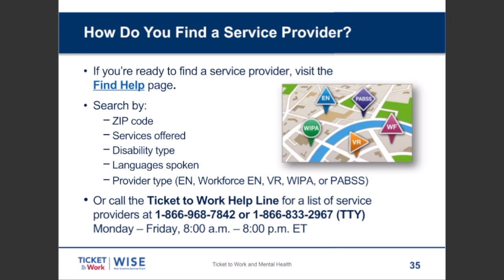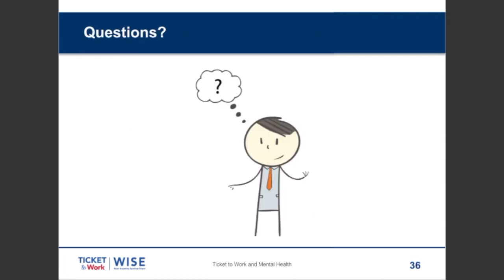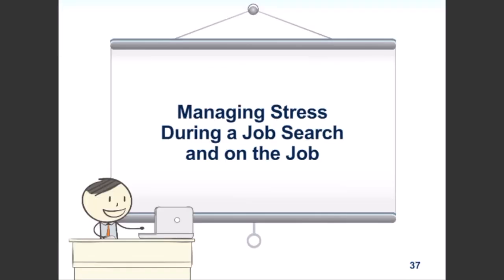I want to revisit the importance of the Ticket to Work Helpline. You can get a list of service providers customized for you from our helpline team at 1-866-968-7842, or through TTY at 1-866-833-2967. And with that, let's move forward now to focus on our theme around mental health and managing stress during a job search and on the job.